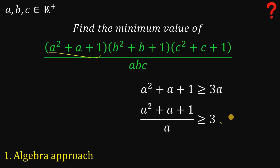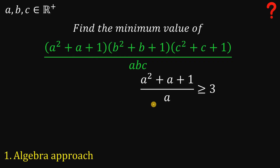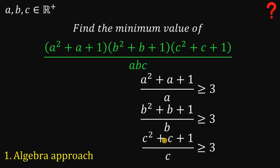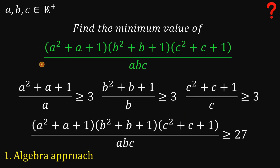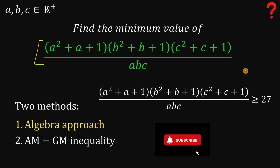Using the same method, expanding (B minus 1) squared gives us B squared plus B plus 1 all over B, which is also greater than or equal to 3. With the same reasoning, C squared plus C plus 1 all over C is also greater than or equal to 3. Now, using these three inequalities and multiplying all of them together, we arrive at the given expression being greater than or equal to 27. This means the minimum value of the expression is 27, and this happens when A equals B equals C equals 1. So using the algebra approach, the minimum value is simply 27.